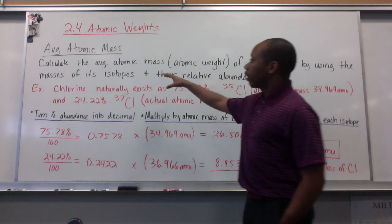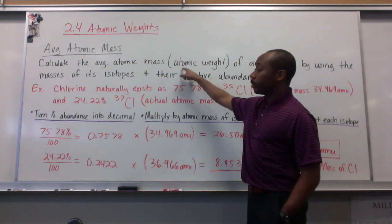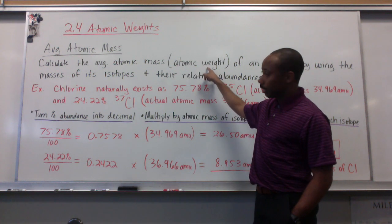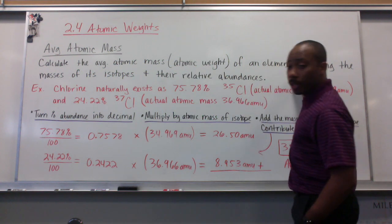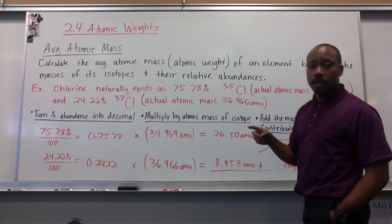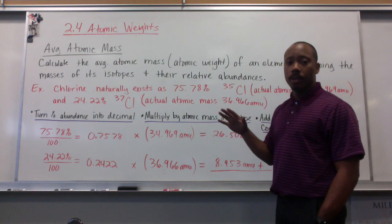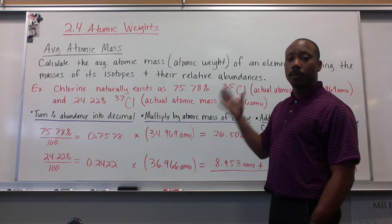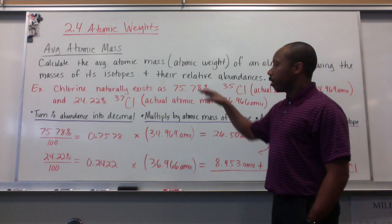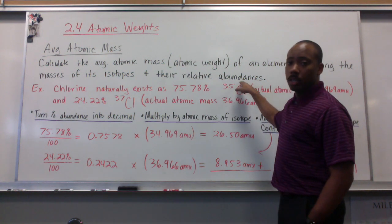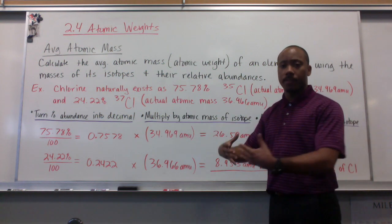When we calculate the average atomic mass, which is also sometimes called the atomic weight of an element, we do this by using the masses of the isotopes of that particular element and their relative abundances. So how much of each is present in a given sample.